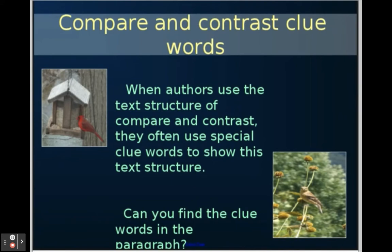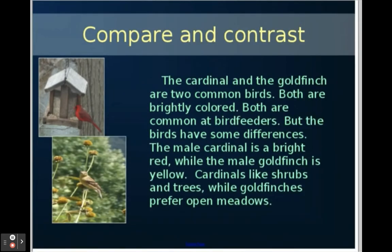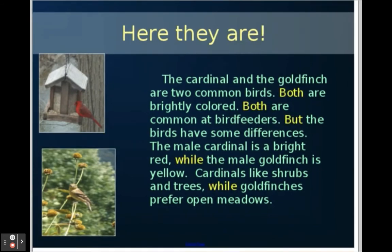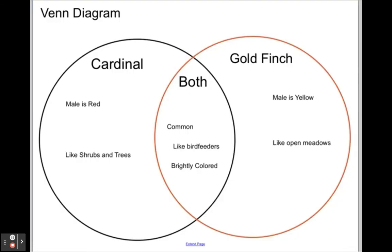Can you find the clue words in the paragraph? Let's take a look at it again. Do you see the signal words that show it is a compare and contrast? Here they are: 'Both are brightly colored,' 'both are common at bird feeders' — that describes how they're the same. 'But they have some differences' and 'the male cardinal is bright red while the other one was yellow.' So that's compare and contrast at work.